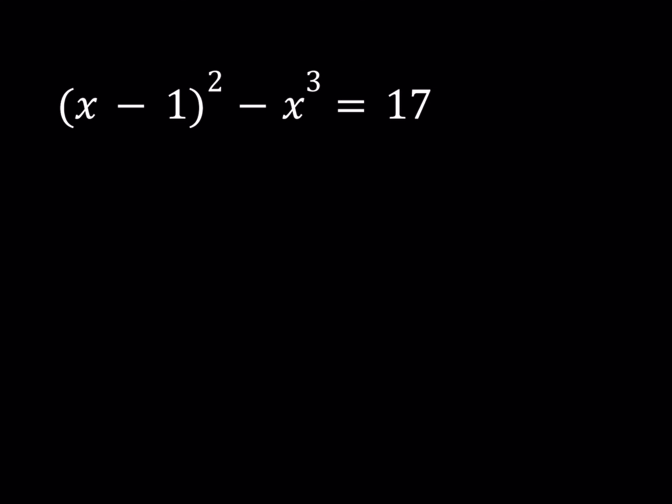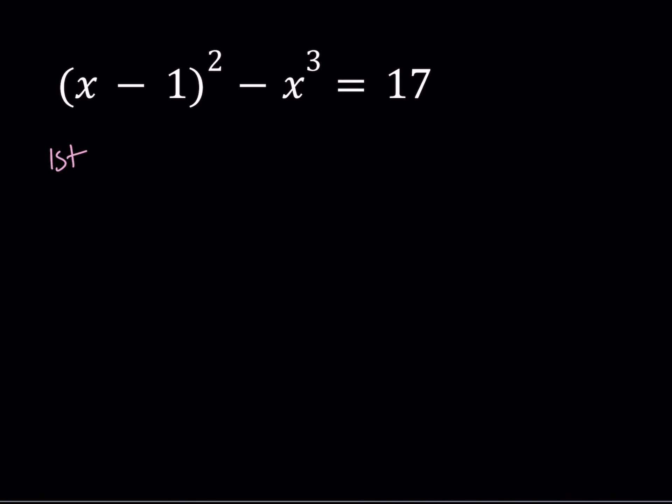We'll see in a little bit but first I want to show you the first method. I'm not going to completely work it out but I just want to talk about it briefly. Now, if I expand everything, I get x squared minus 2x plus 1 minus x cubed is equal to 17. If I put everything on the same side, I get x cubed minus x squared plus 2x plus 16 is equal to 0.